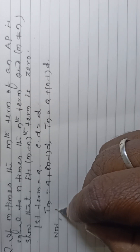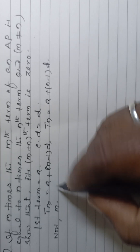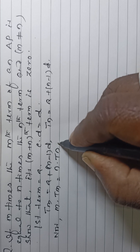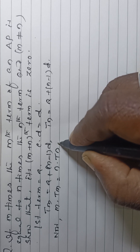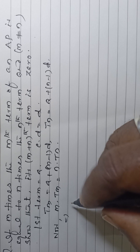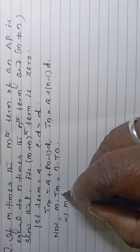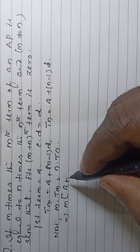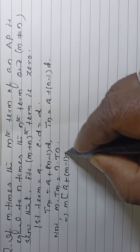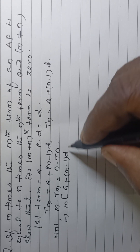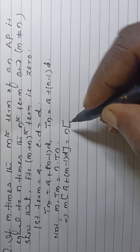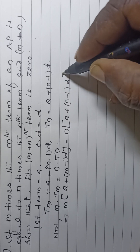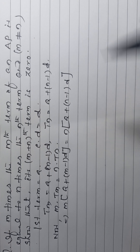Now, m into term m is equal to n into term n, according to the question. That means, m into [a plus (m minus 1)d] is equal to n into [a plus (n minus 1)d].